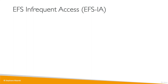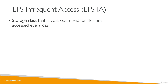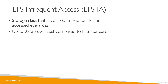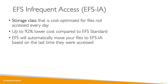There is a storage class you need to know for EFS called EFS Infrequent Access, or EFS-IA. It's a storage class that is cost-optimized for files that you don't access very often — for example, files you don't access every day. This storage class gives you up to 92% lower cost for storing data compared to EFS Standard. If you enable EFS-IA, EFS will automatically move your files to EFS-IA based on the last times they were accessed using a lifecycle policy.